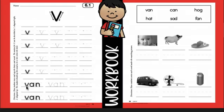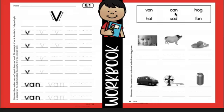And what's this word say? V-A — van. And we're gonna write van, van, van, van, van. And then we're going to match our words underneath the pictures. V-A-N — van. C-A-N — can. H-O-G — hog. H-A-T — hat. S-A-D — sad. F-A-N — fan.